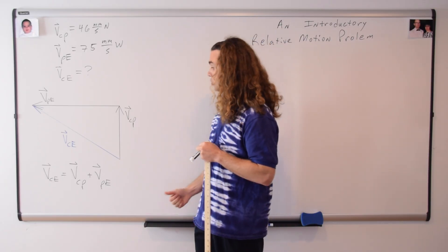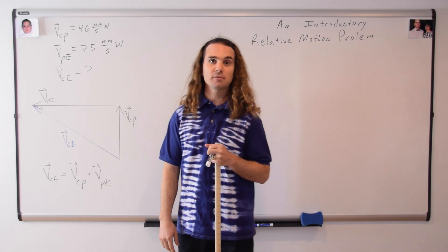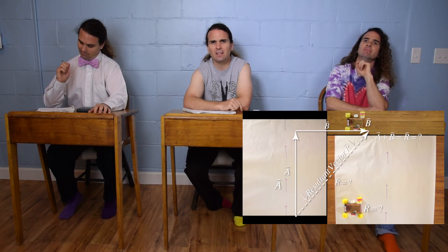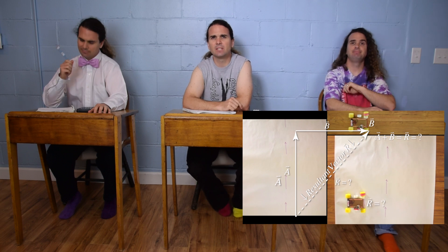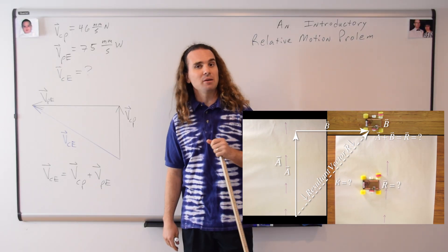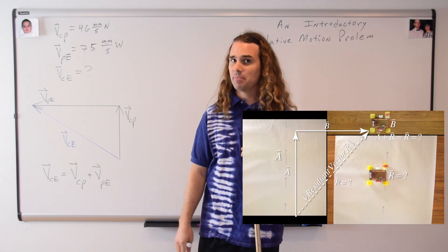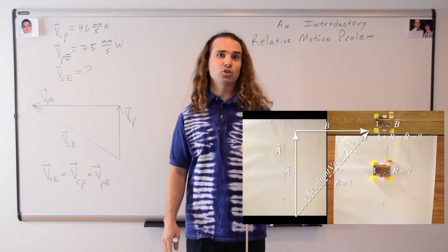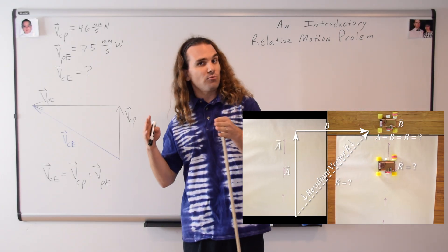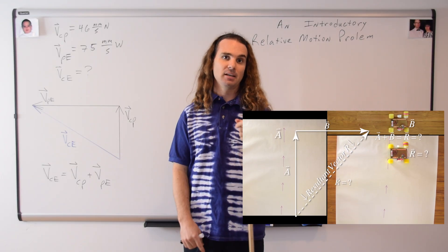Bobby, could you please solve for the velocity of the car with respect to the earth? This looks exactly like the problem we did when you introduced vector addition, is it? Absolutely, Bobby, you are correct. And I've done that on purpose, actually, to show that relative motion is vector addition.